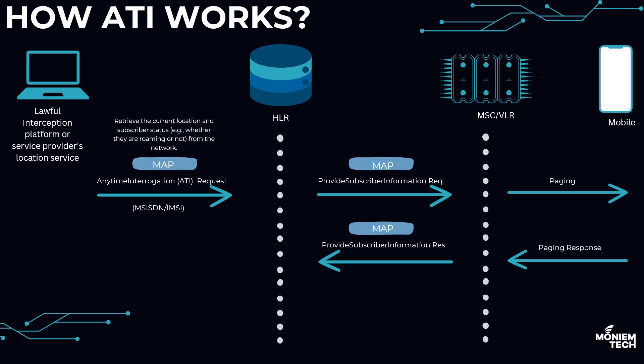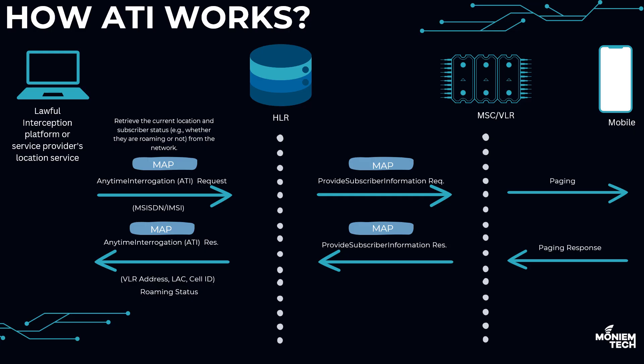The HLR takes the information received from the MSC in the PSI response and uses it to construct the ATI response, sending it back to the requesting application — whether that is a lawful interception platform or a location-based service provider. The ATI response includes Cell Global Identity information such as Cell ID, MCC (Mobile Country Code), MNC (Mobile Network Code), and Location Area Code.